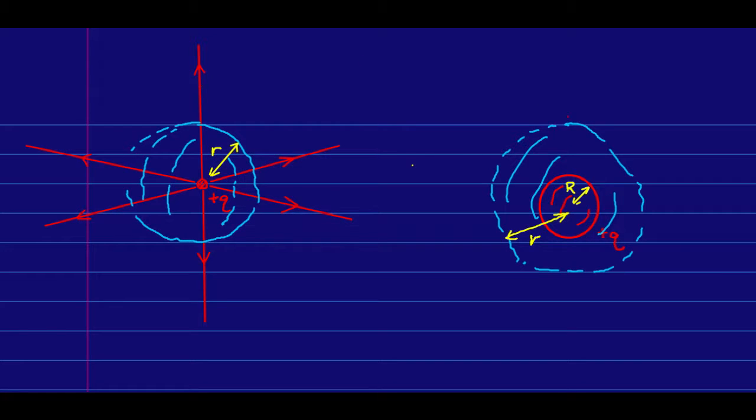And so first of all, that tells us that the field must be perpendicular to the surface of this sphere everywhere. And it must have the same magnitude everywhere on the surface of this sphere, just as it did for this charge.